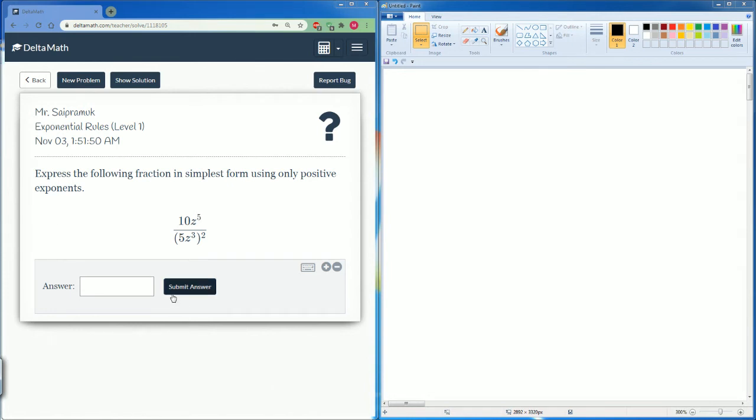Welcome to the Delta Math tutorial. This is on the exponent rule level 1. Here it asks us to express the following fraction in simplest form using only positive exponents.